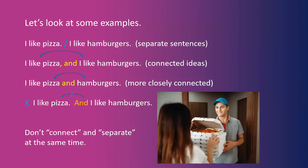Let's look at some examples. "I like pizza. I like hamburgers." These are two separate sentences, separated at the period. "I like pizza, and I like hamburgers." These are connected ideas within the same sentence, connected with the word "and" and a comma.